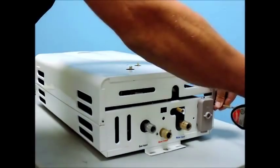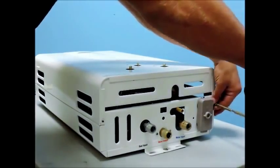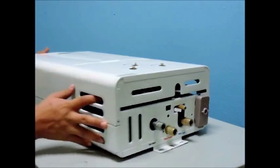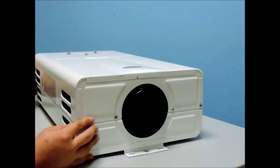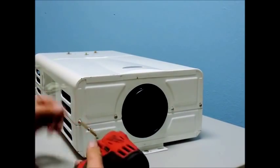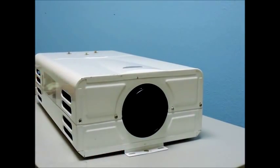Remove the knobs by pulling them straight off and away from the unit, and then remove the cover screws. Two are located on the bottom corners and four across the top center seam. Next, remove the cover by lifting up on the cover.